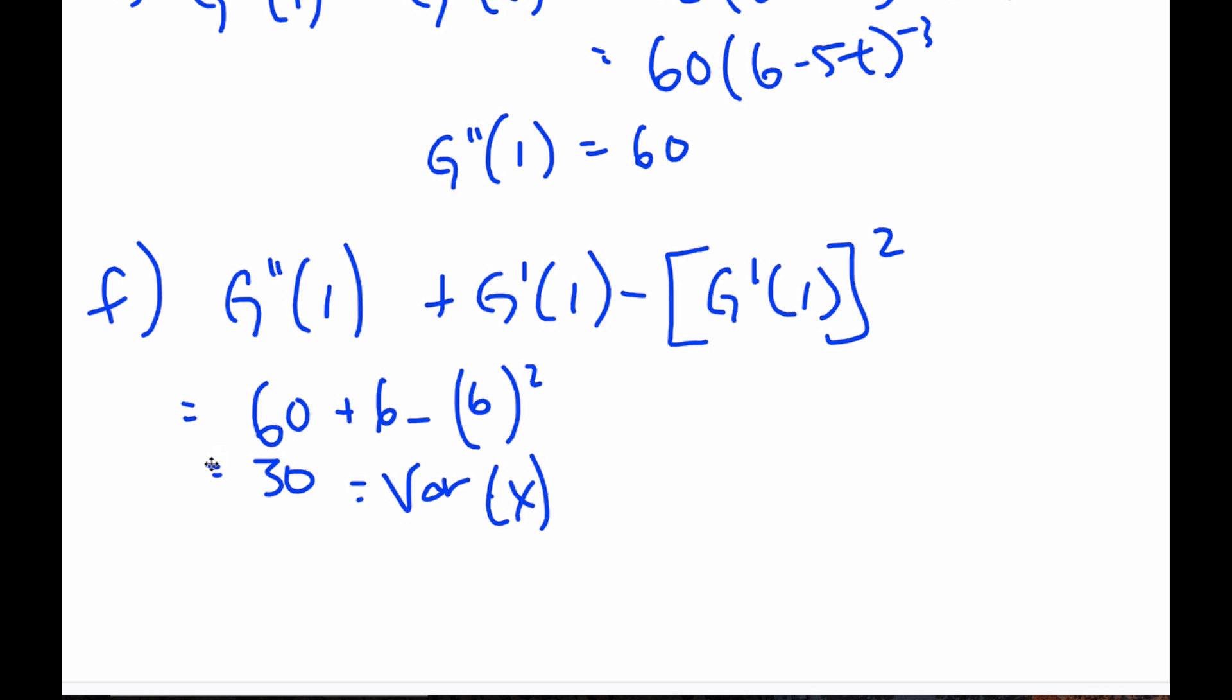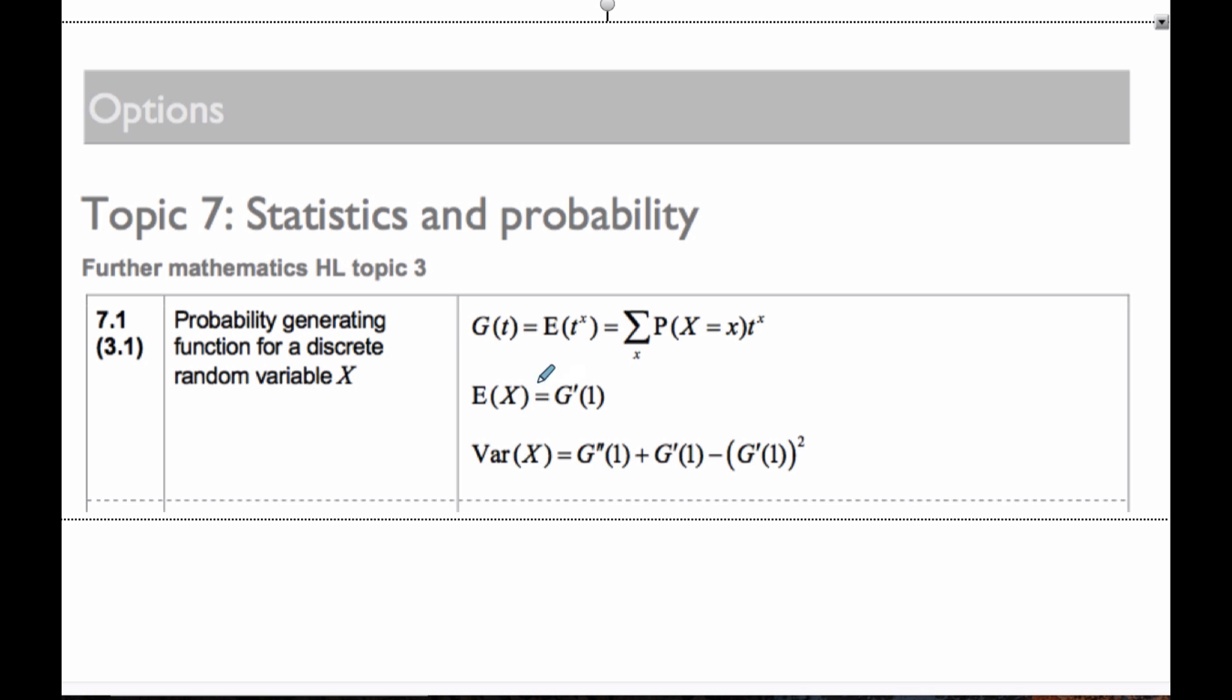And so H says to generalize our results. If I generalize results, this is what I come up with. From my formula booklet, I can see the expected value is equal to G prime at one, and the variance is equal to G double prime at one plus G prime at one minus the square of G prime at one. And so this is handy from your formula booklet. We can use a generating function to calculate expected value and variance quite simply.